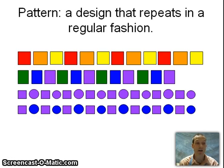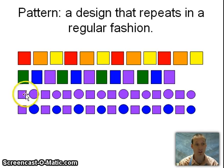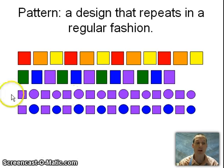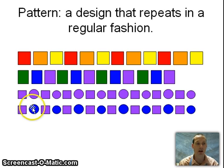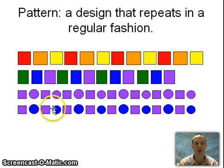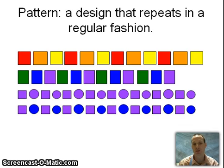Our third pattern is dictated primarily by shape. You see I have a square, circle, square, circle, square, circle, whereas the color remains constant — violet. The fourth pattern is dictated by both color and shape. So I have a violet square, blue circle, violet square, blue circle, and that pattern continues out to the end.